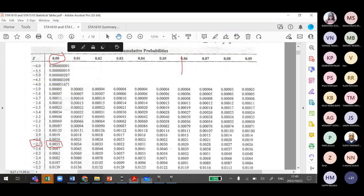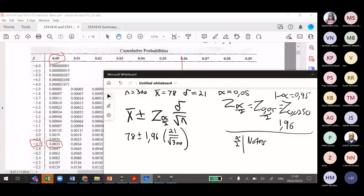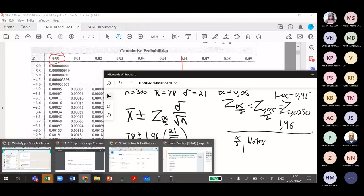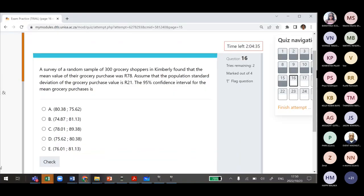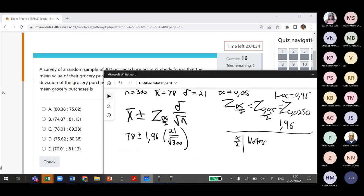There is a table that has the critical values for Z alpha over 2. Use that table to identify your critical values and have it ready in your confidence interval chapter that you would have summarized. You can minimize on that if you have created that. So let's calculate the confidence interval quickly.